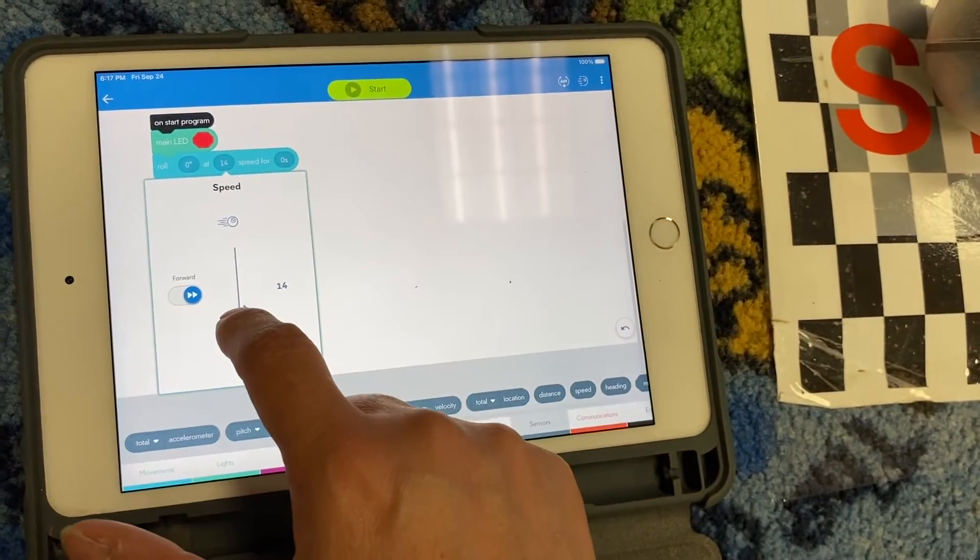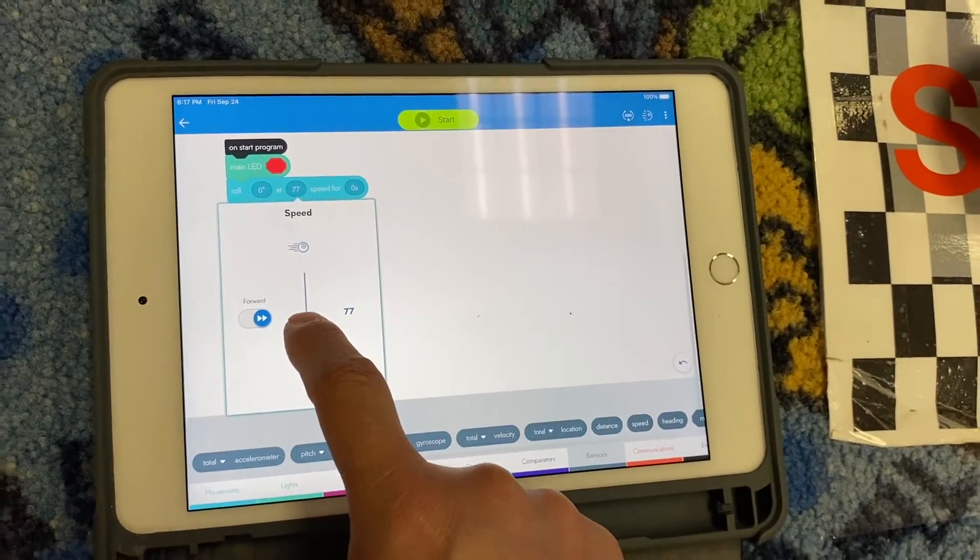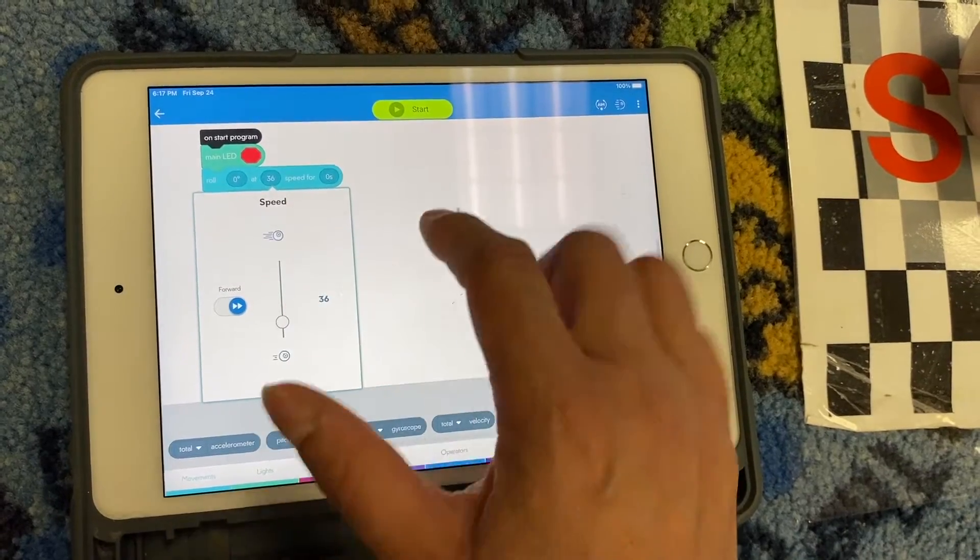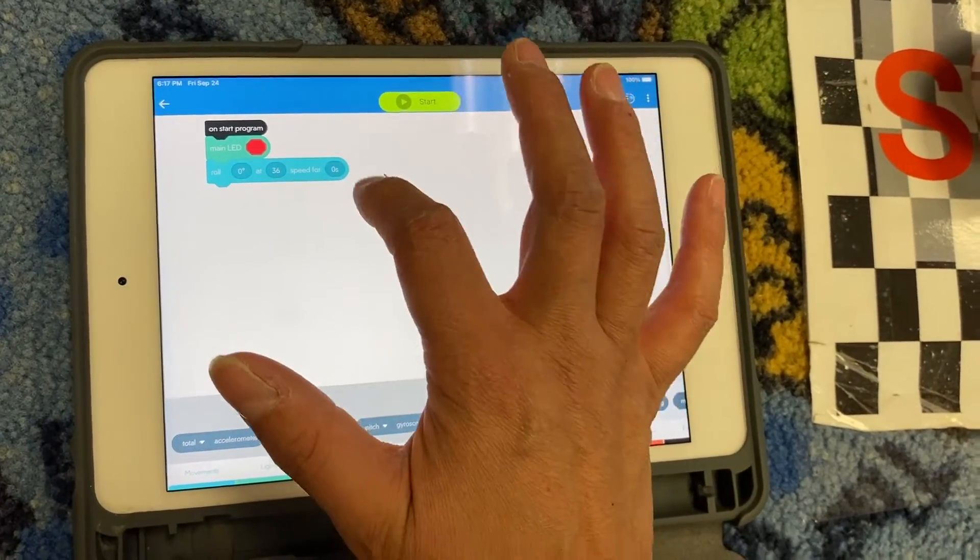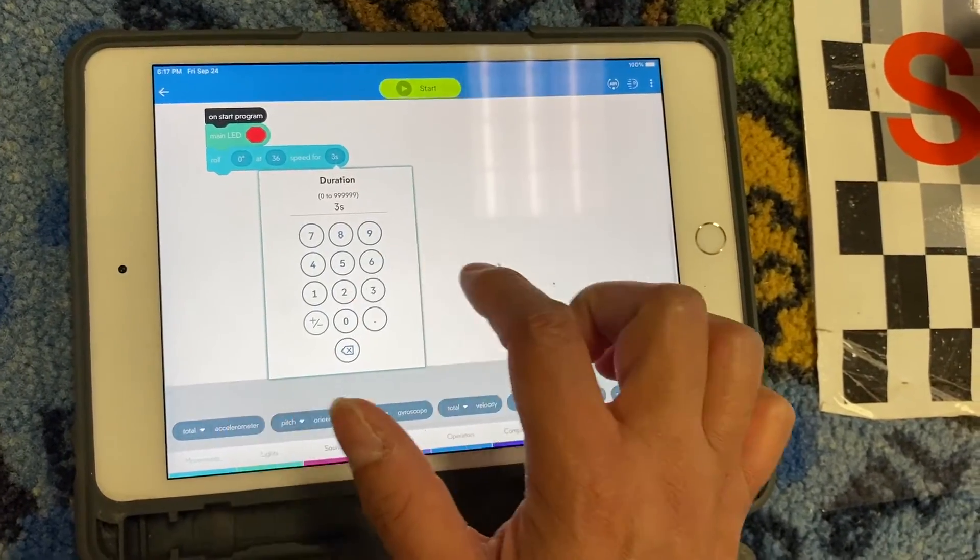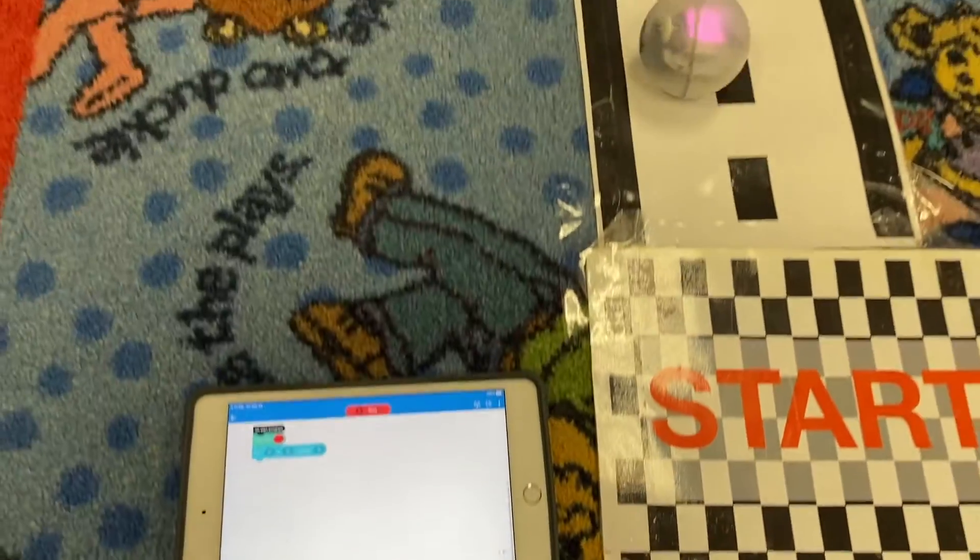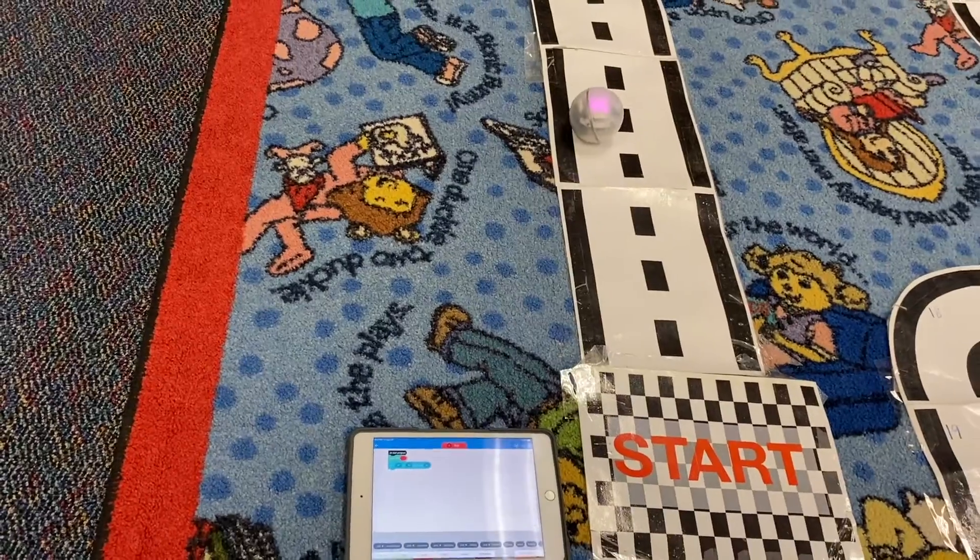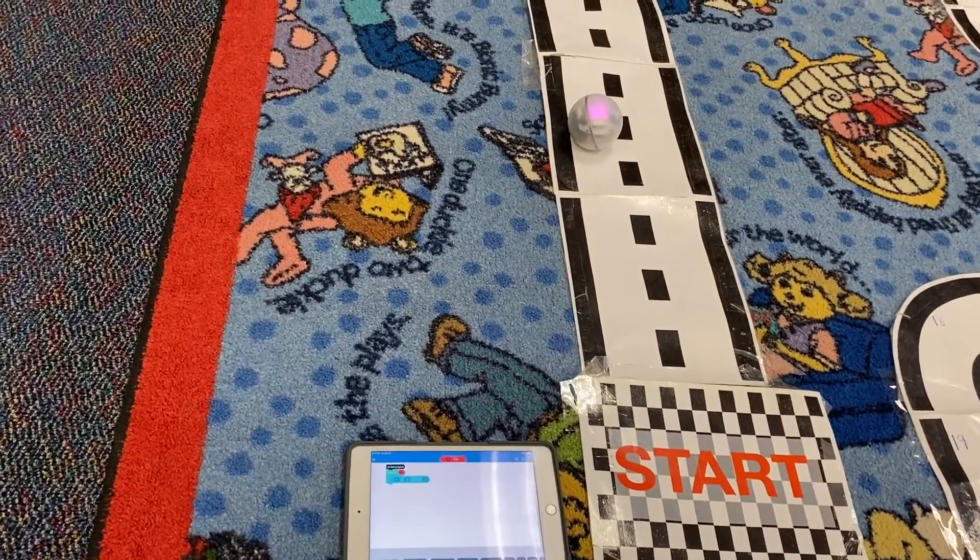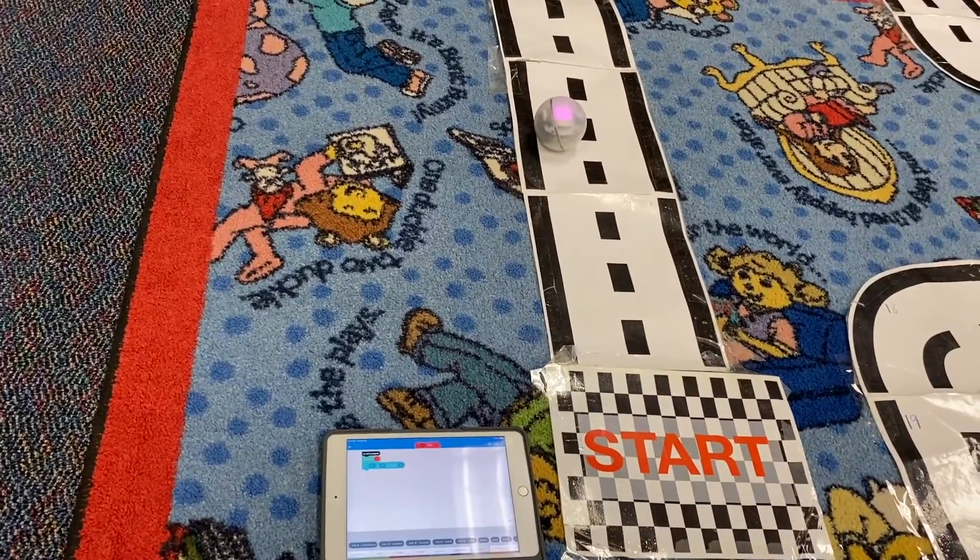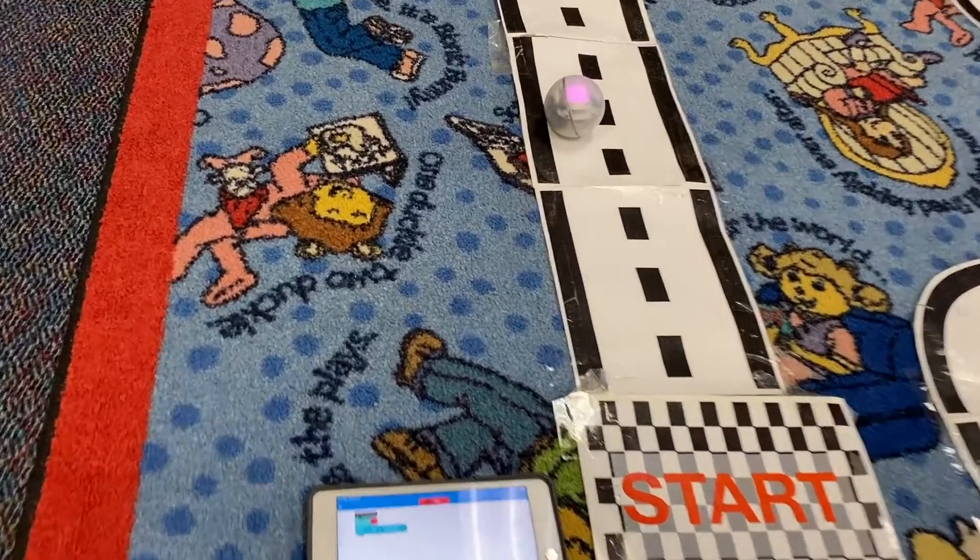Here this would be your speed, so how fast do you want it to roll, and then for how many seconds. Let's say three seconds, so you press play, I mean Start, and see I just coded it right there. And you can be making those adjustments on your code, and that's how you code boys and girls.